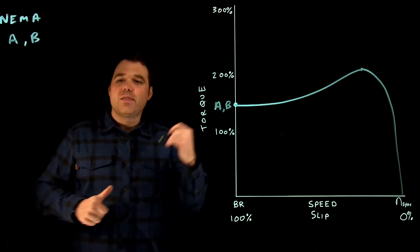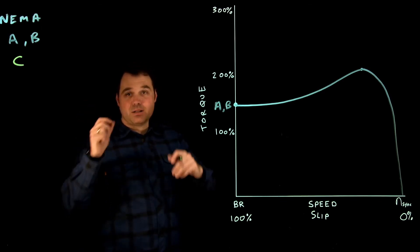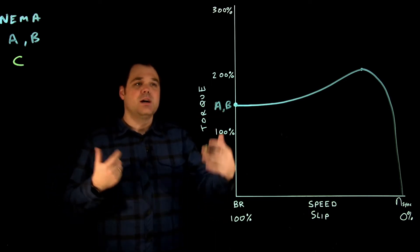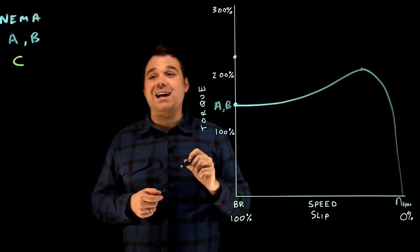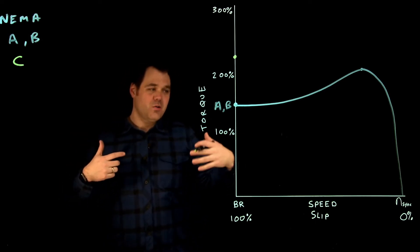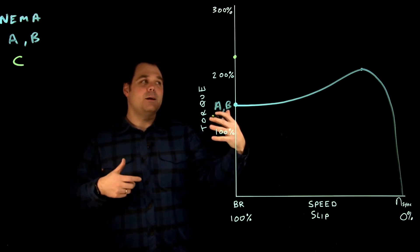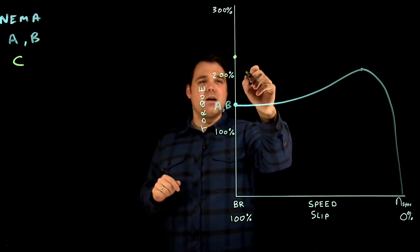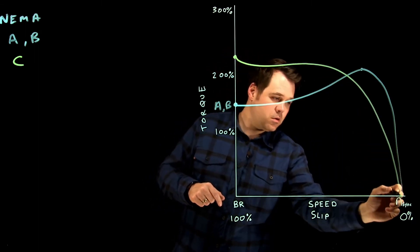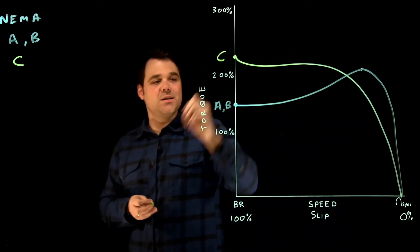Then we come into the NEMA design C. We like the C. The C is that double squirrel cage rotor, so it gives us a more effective start. We get around 225% at start, and that's also where our breakdown torque occurs. Now this motor is a little bit less efficient because of that dual rotor squirrel cage. The torque curve for that one looks like this. The more vertical we are here, the more efficient that motor would be. So that's a NEMA C.